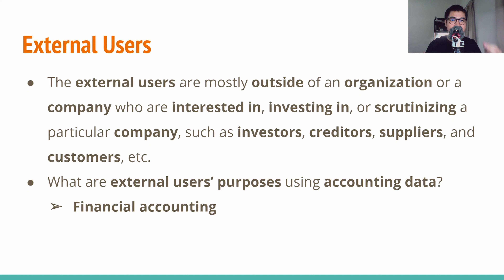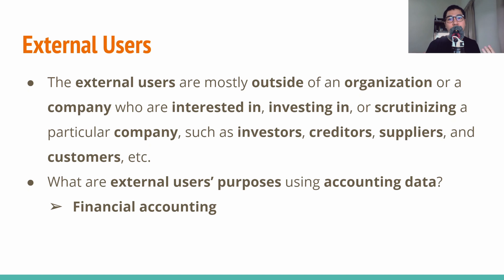Finally, we move on to external users. If internal users are mostly inside of a company, then external users would be outside. They are normal people or contrasting organizations who want to know about the financial information of a company they are interested in — for example, investors, creditors, suppliers, and customers. They use accounting information to evaluate the risk of granting credits or lending money. This is the reason financial accounting has been born. It provides external users with economic and financial information. For example, taxing agencies like the Internal Revenue Service want to know how companies comply with tax regulations, and customers want to see if a business like IHA company can continue to deliver on its promises of services.